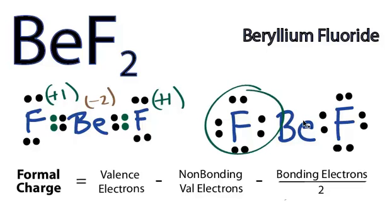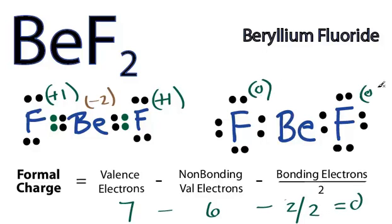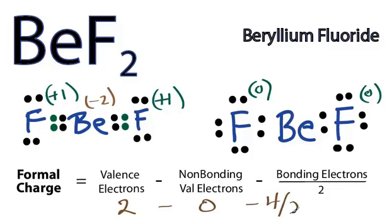On this molecule, let's do the fluorine. So we have seven minus six minus two over two. That equals zero. So formal charge is zero. Same for this one, since it's the same. And then for beryllium, we have two minus zero minus the four bonding electrons over two. That also equals zero. So the formal charge here is zero.